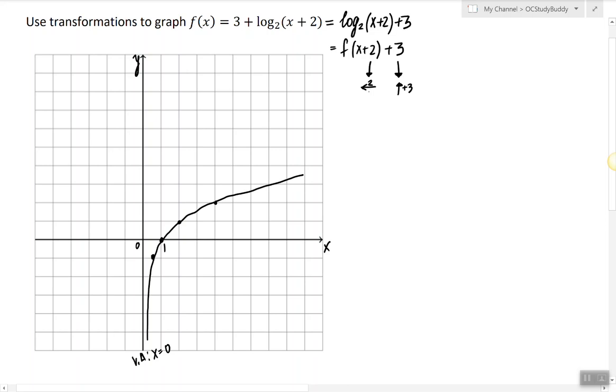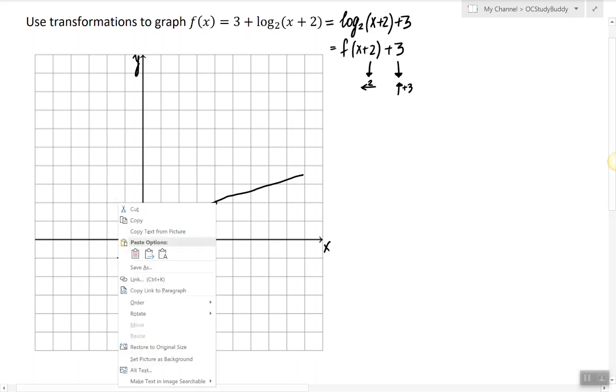I'm going to shift this function 2 units to the left and 3 units up at the same time. So every point that I have I will move 2 units to the left and 3 units up, starting with this point: 2 units to the left, 3 units up.